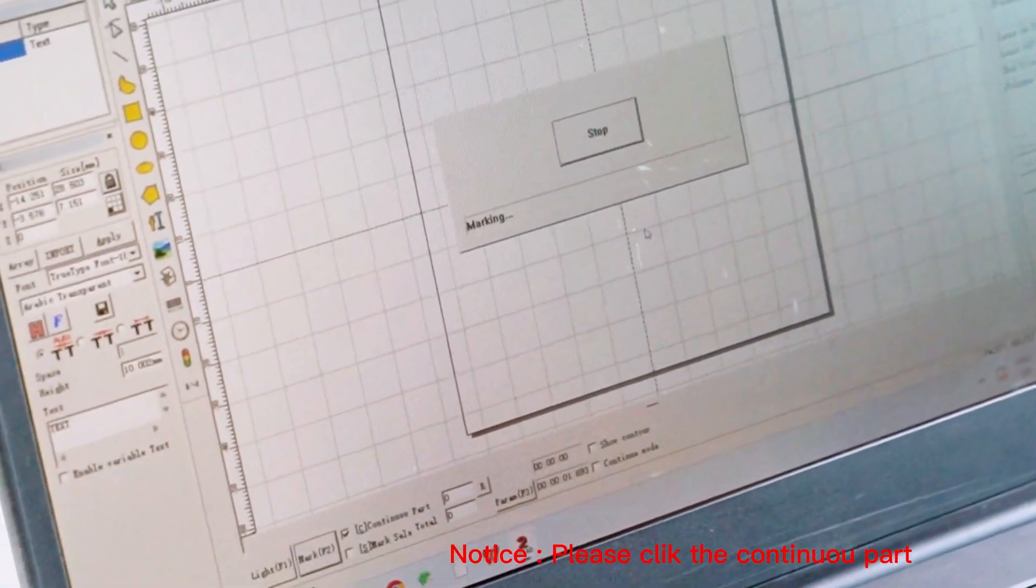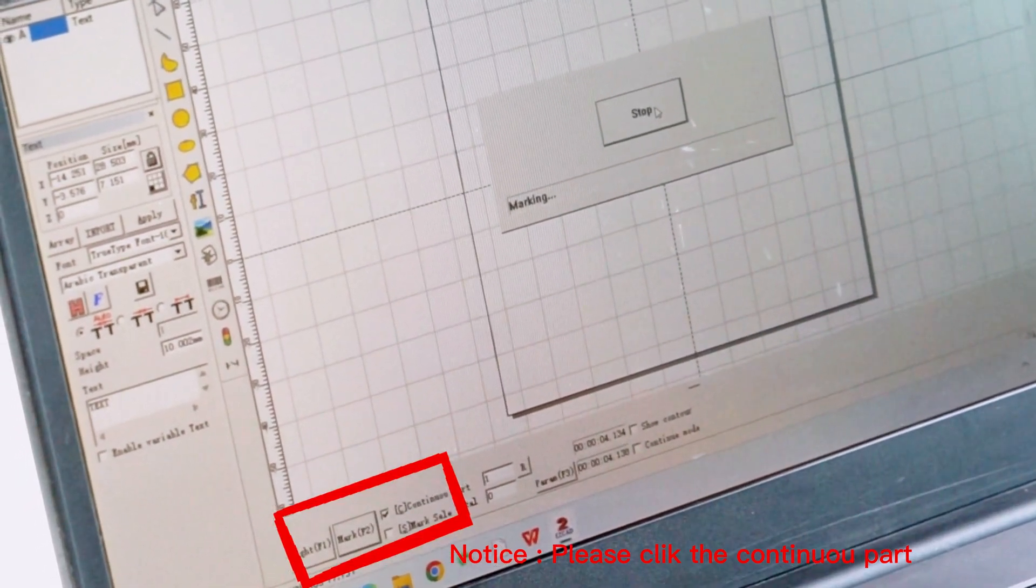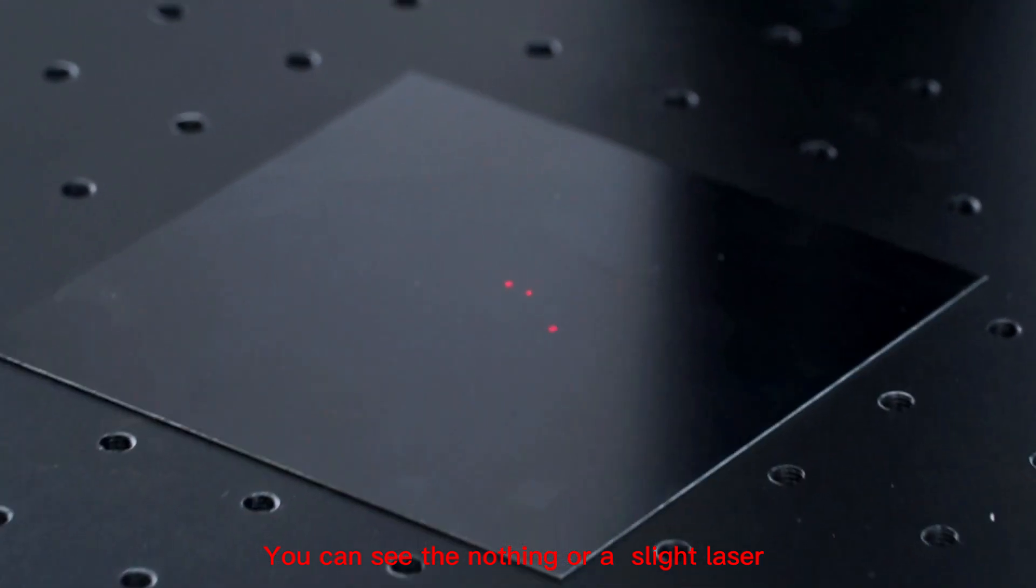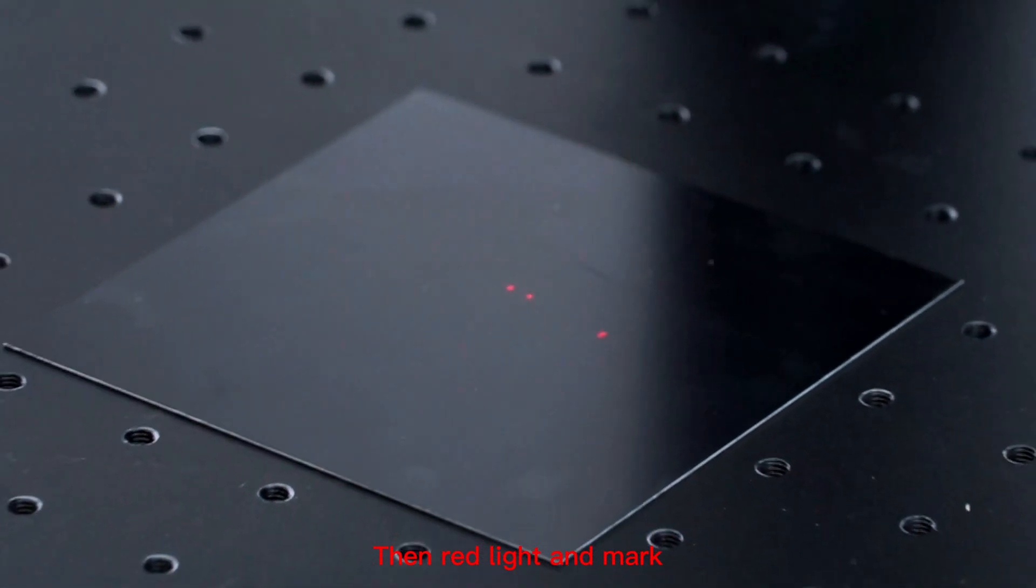Notice: Please click the continue button. You can see nothing or a slight laser at first. Then activate red light and mark.